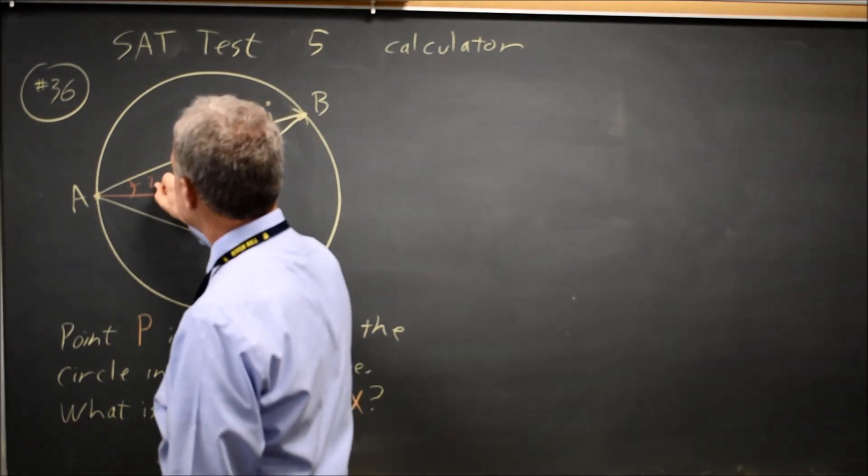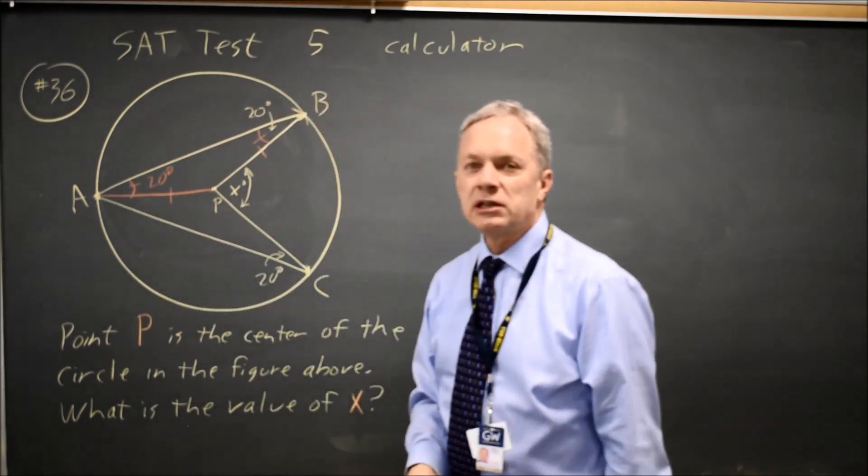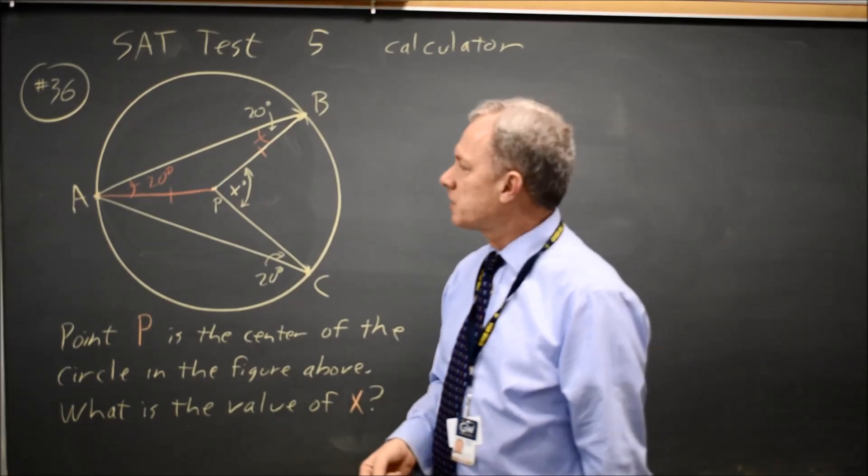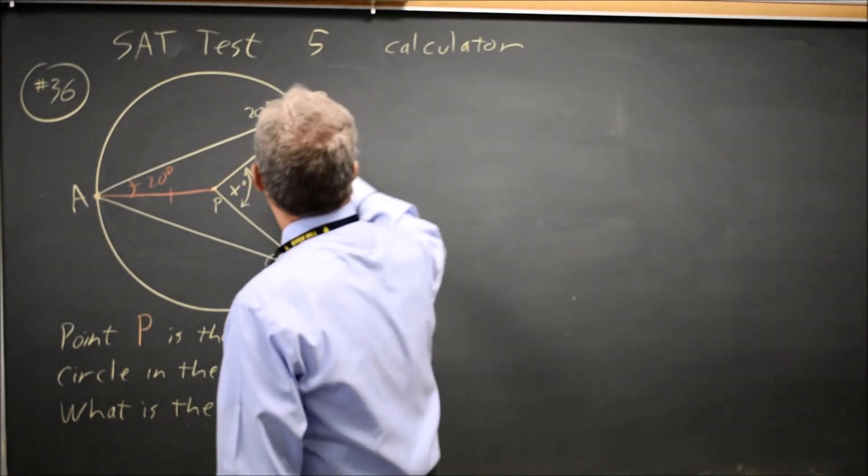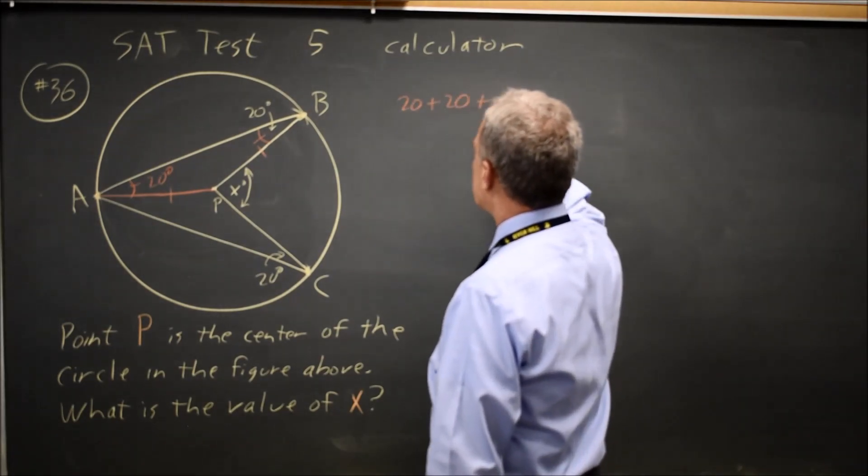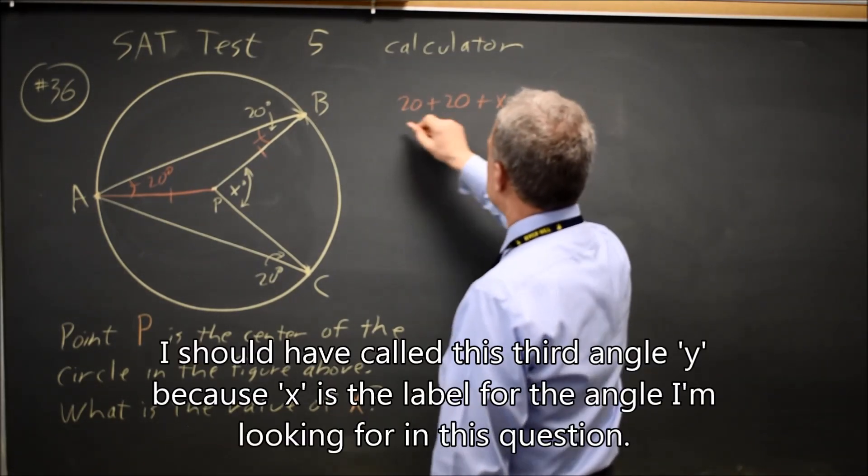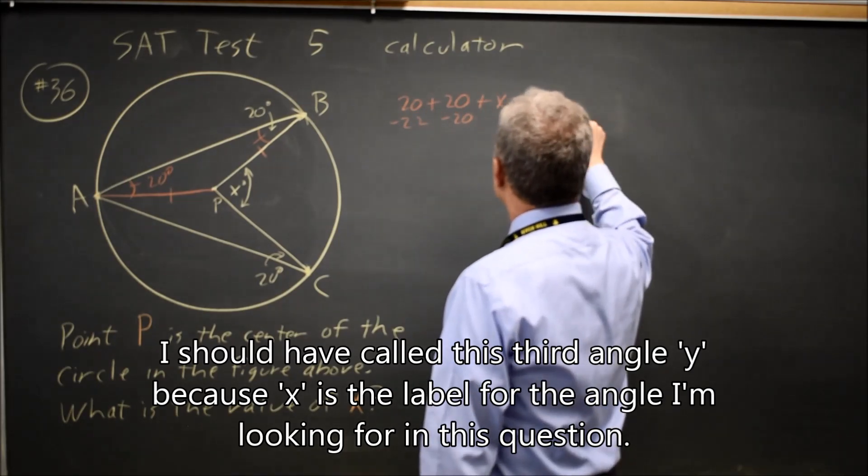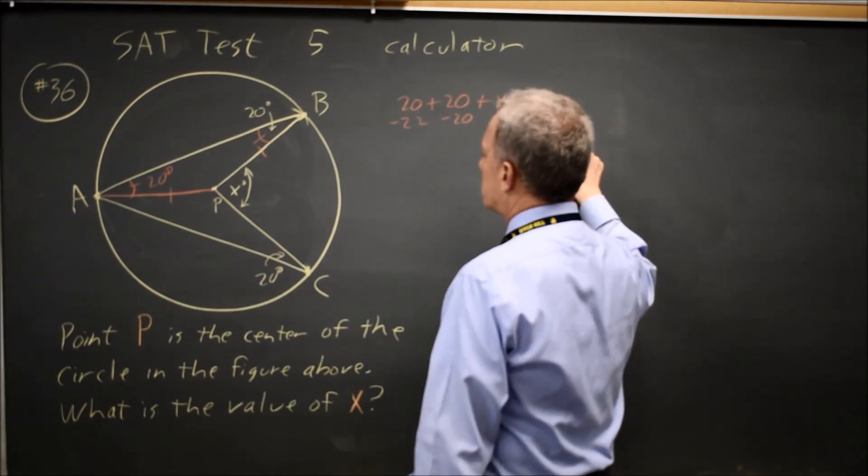These are both 20 degrees. If those are 20 and 20, the third angle adds up to 180, so 20 plus 20 plus X equals 180. X equals 140 degrees.